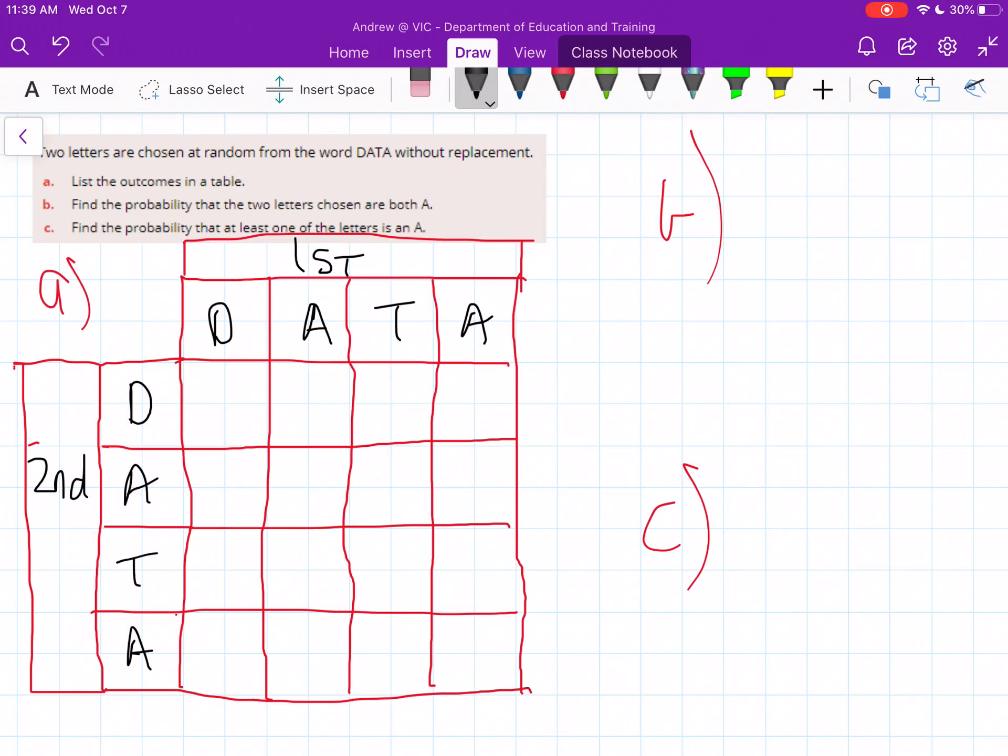G'day everyone, in this video we're going to be looking at finding the sample space for events without replacement. This means whenever you select something, you can't select the same thing again unless there's more than one of them.